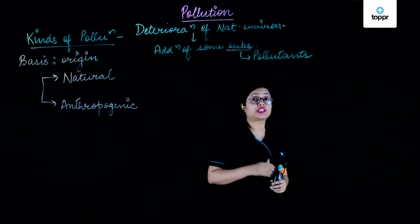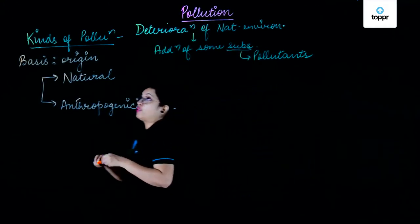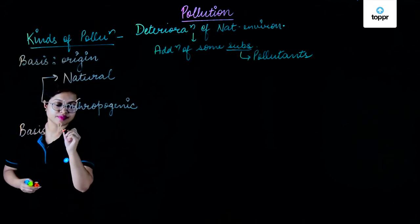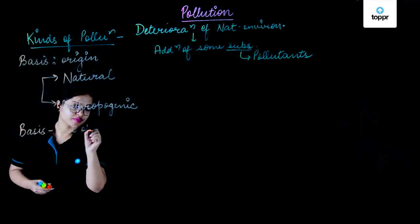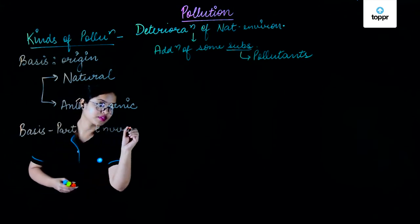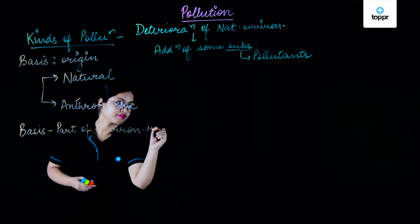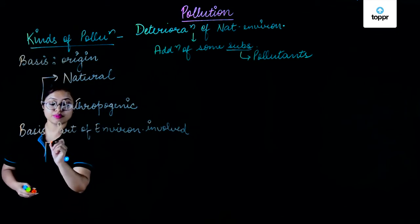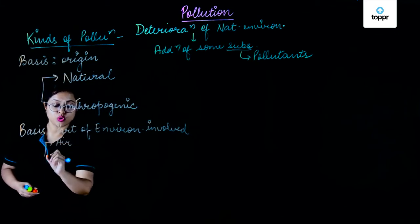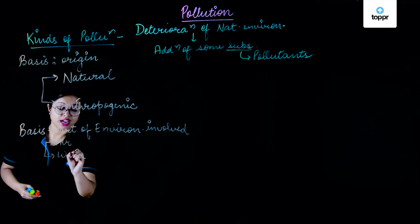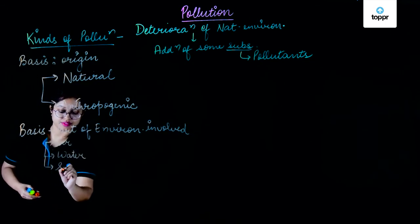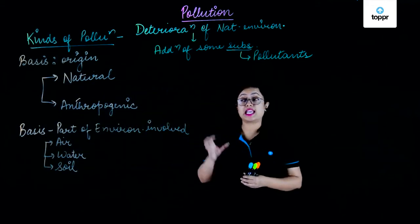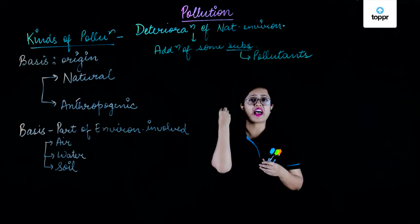The next kind of pollution is on the basis of the part of environment which is involved. According to this, pollution is of three types: air pollution, water pollution, and soil pollution. Air pollution means the pollutant particles are in air, like aerosols, etc.